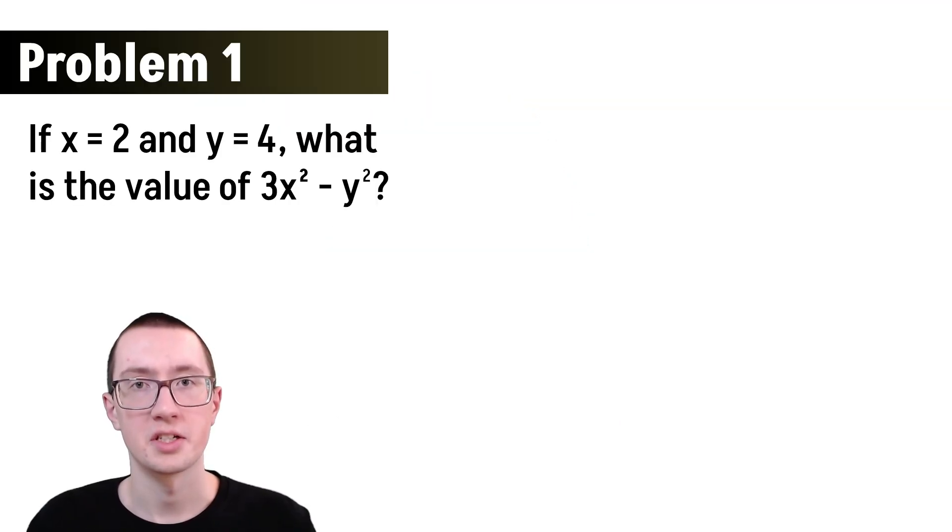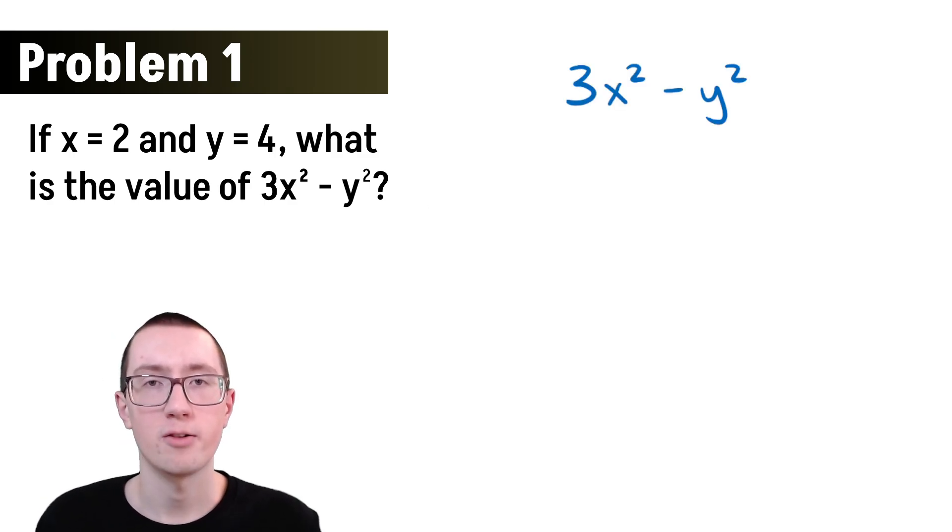So here's the first example that we'll be doing. It says, if x equals 2 and y equals 4, what is 3x squared minus y squared? So remember that whenever an algebra problem tells us that two things are equal to each other, we can replace them with each other in the equation.